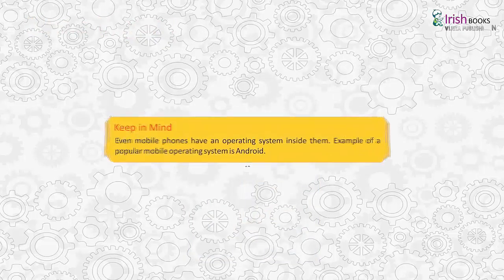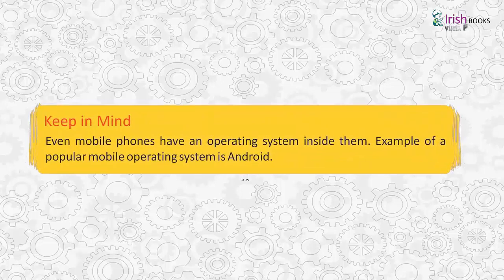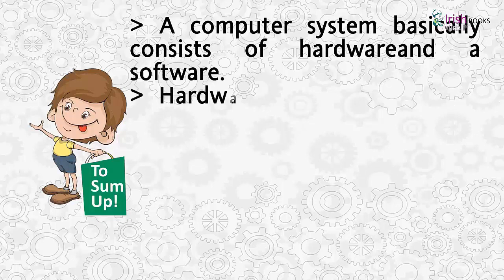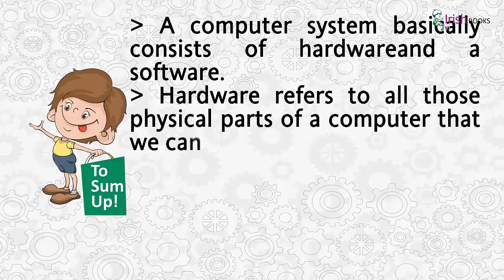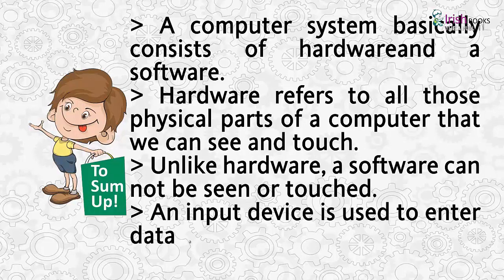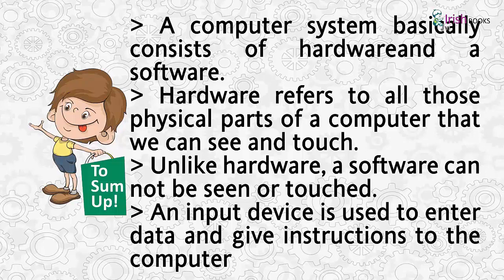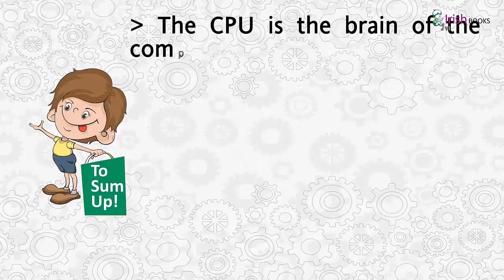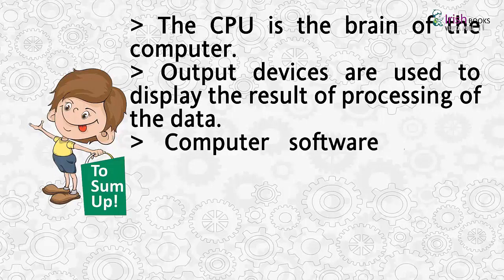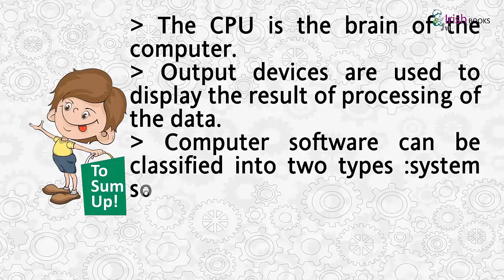Keep in mind: even mobile phones have an operating system inside them. A computer system basically consists of hardware and software. Hardware refers to all those physical parts of a computer that we can see and touch. Unlike hardware, a software cannot be seen or touched. An input device is used to enter data and give instructions to the computer. The CPU is the brain of the computer. Output devices are used to display the result of processing of the data. Computer software can be classified into two types: system software and application software.